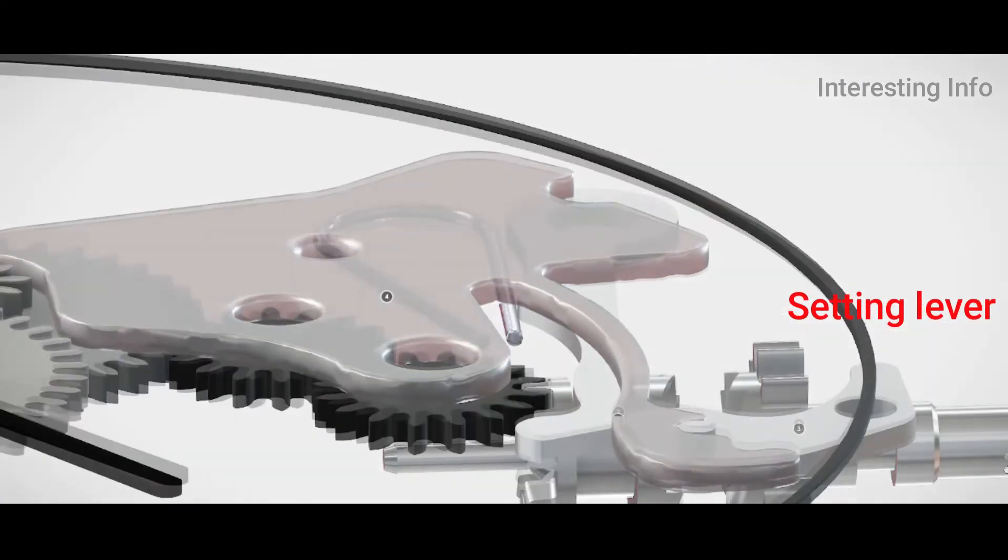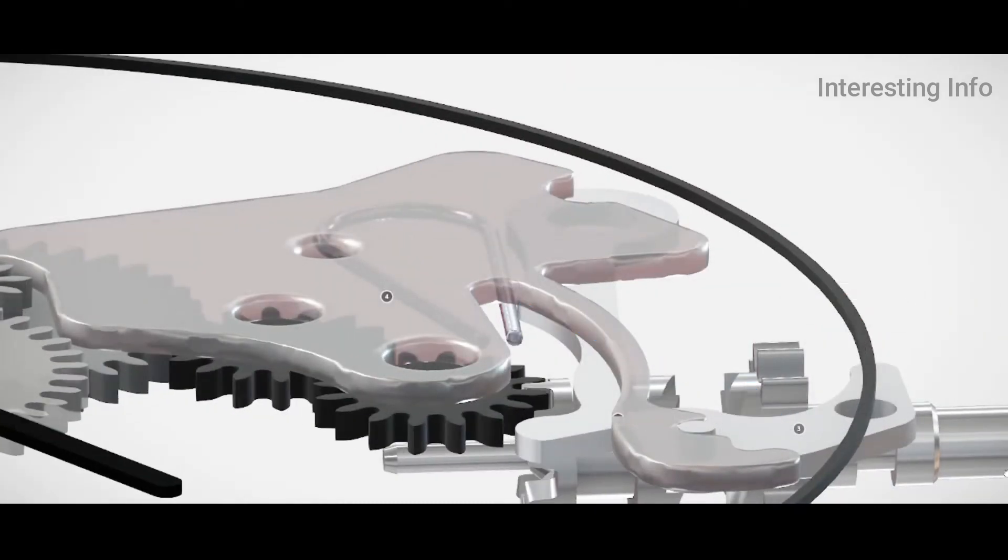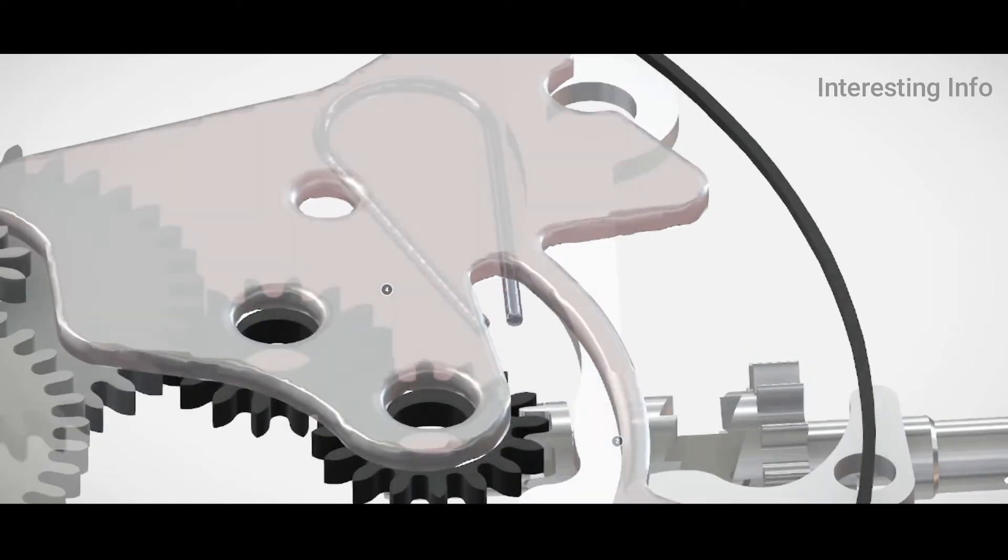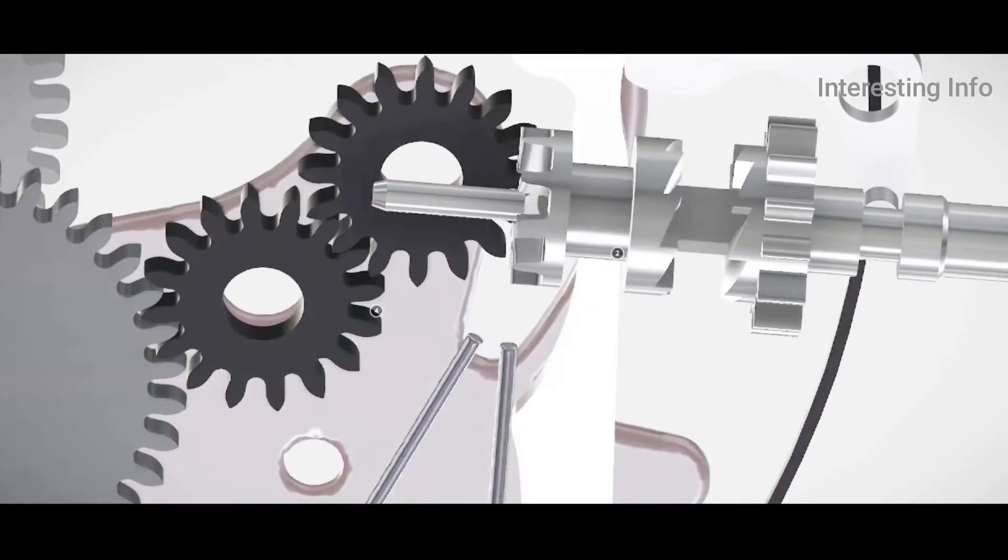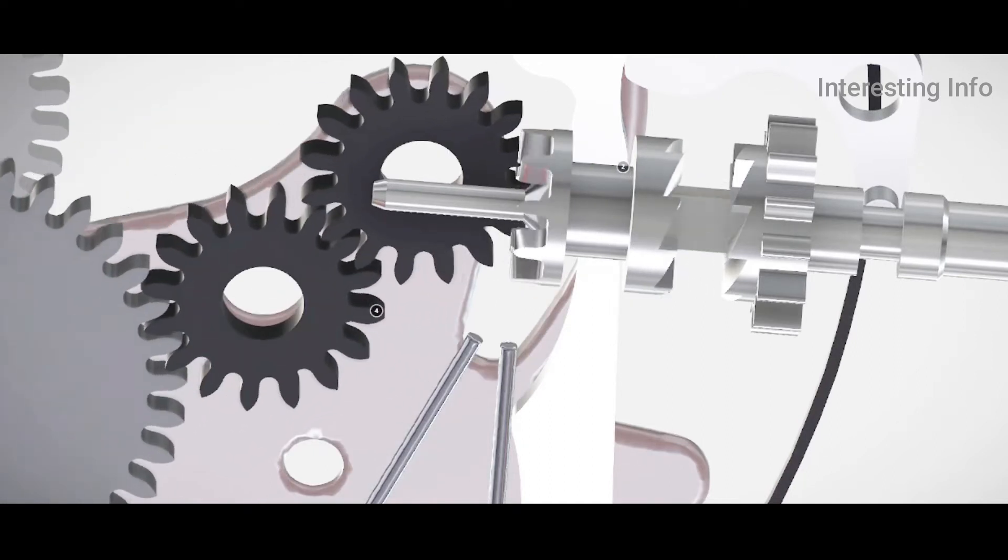Number 3: Setting Lever. Essentially, lever set watches require a lever release before the hands can be manipulated via the crown. Most lever set watches require unscrewing, prying off, or otherwise removing the bezel and crystal of the watch.